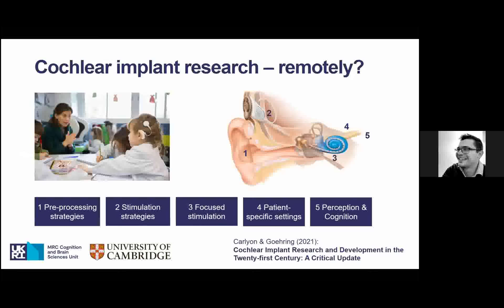We do cochlear implant research. These are ear-worn devices that look like a hearing aid, but they're worn by people who have a really severe or profound hearing loss. There's an external part — the speech processor — which picks up speech from the environment and transmits the sound via a magnetic electromagnetic link to an internal implant surgically inserted inside the head, with a little electrode array inserted into the cochlea that electrically stimulates the auditory system.